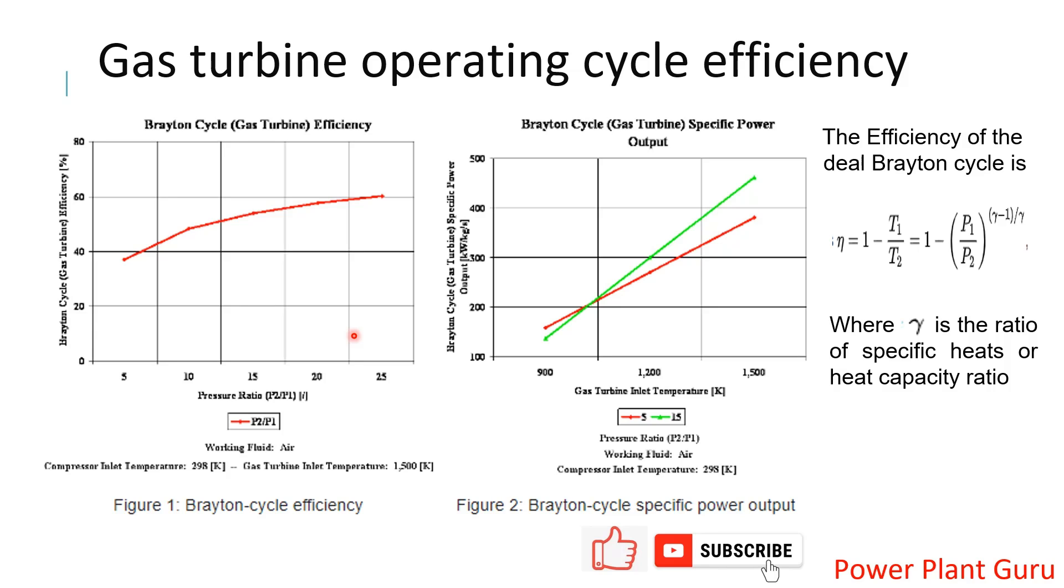This is the formula for Brayton cycle efficiency calculation. Efficiency η = 1 - (T1/T2) = 1 - (P1/P2)^((γ-1)/γ), where γ is the ratio of specific heats. For air, the value of gamma is 1.4. This is a very basic fundamental video on how gas turbines operate on a theoretical basis.